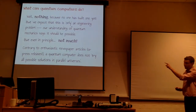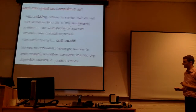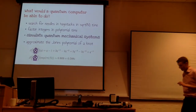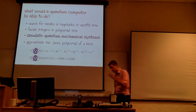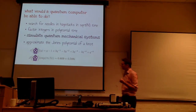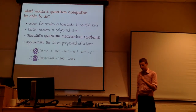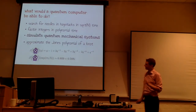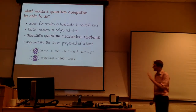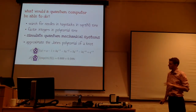So, first of all, I want to think about the not-much that they could do if, in principle, we had one. More or less, there are four things that we know a quantum computer could do if we had one. There are maybe a few extra ones, but all of those have complicated caveats or are a little bit unclear. So these are the four things that we really know a quantum computer could do.